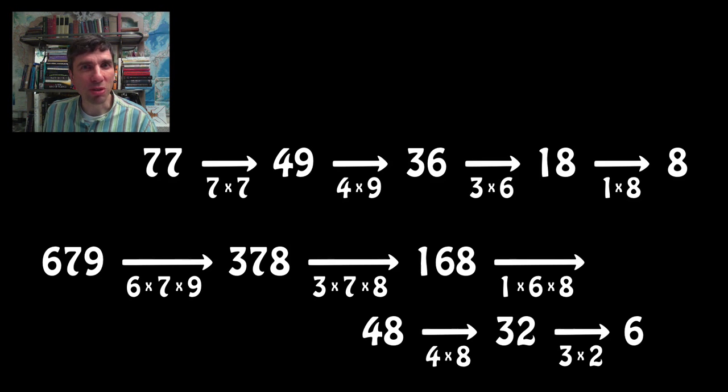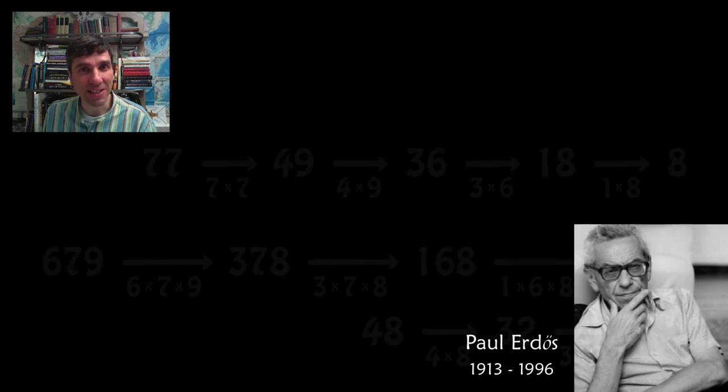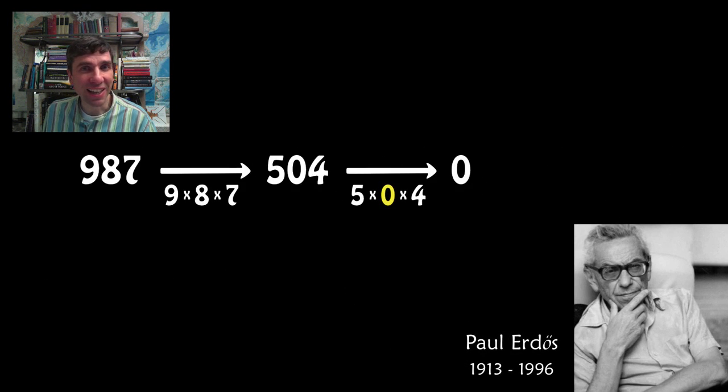Paul Erdős, the most published mathematician in history, also loved to tinker with multiplicative persistence. And he had an idea to stop numbers dying so quickly. So for example, here's 987 and it dies really quickly. So to stop that, he started to explore what would happen if he ignored the zeros altogether or if he turned the zeros into ones. I guess it's the same thing.